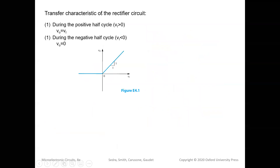The transfer characteristic of the rectifier circuit describes the relationship between output VO and input VI. During the positive half cycle when VI > 0, VO = VI, so the transfer curve is a straight line with a slope of one.